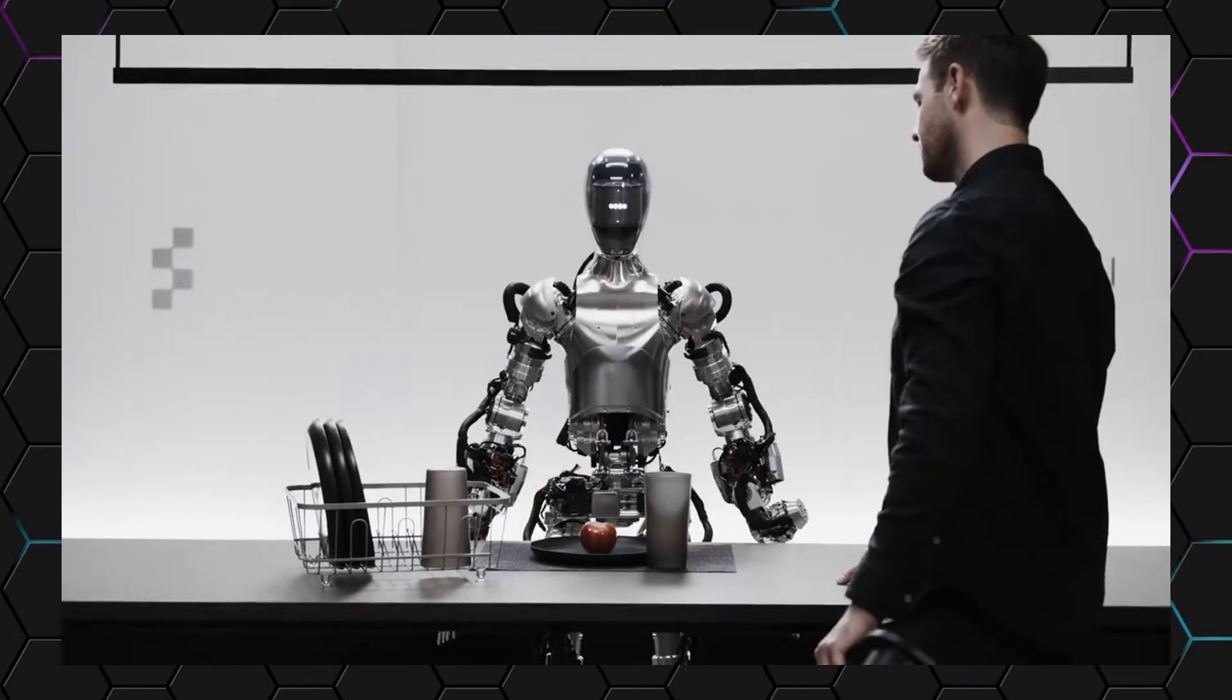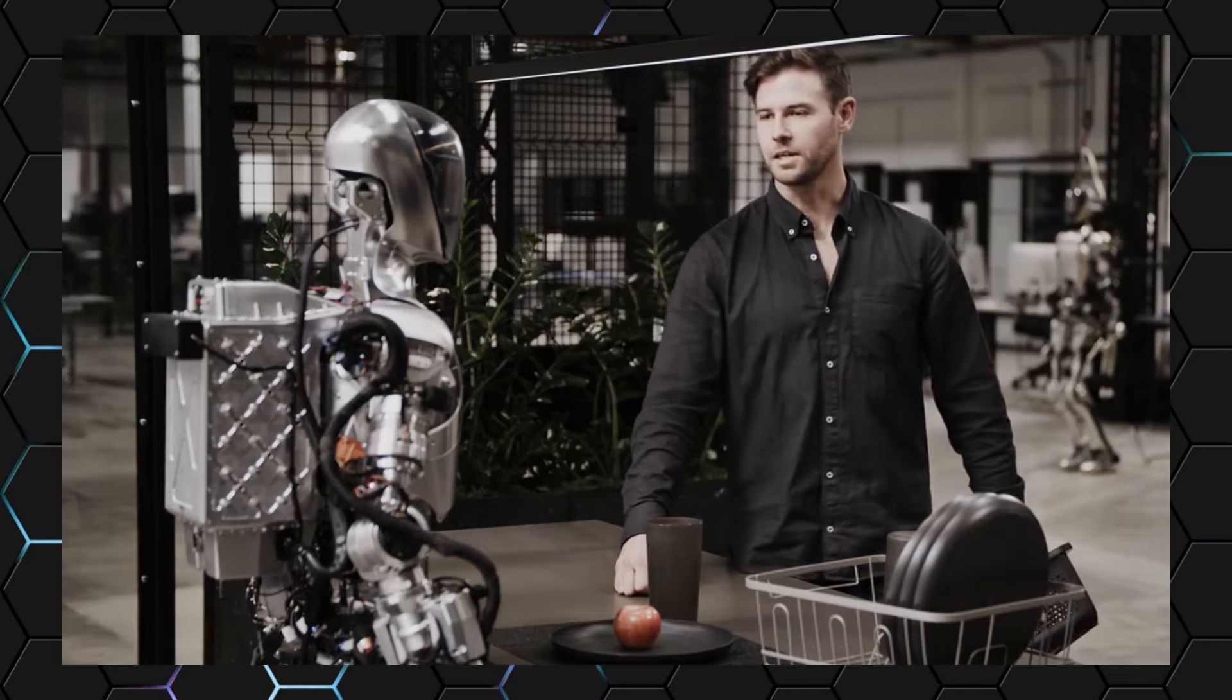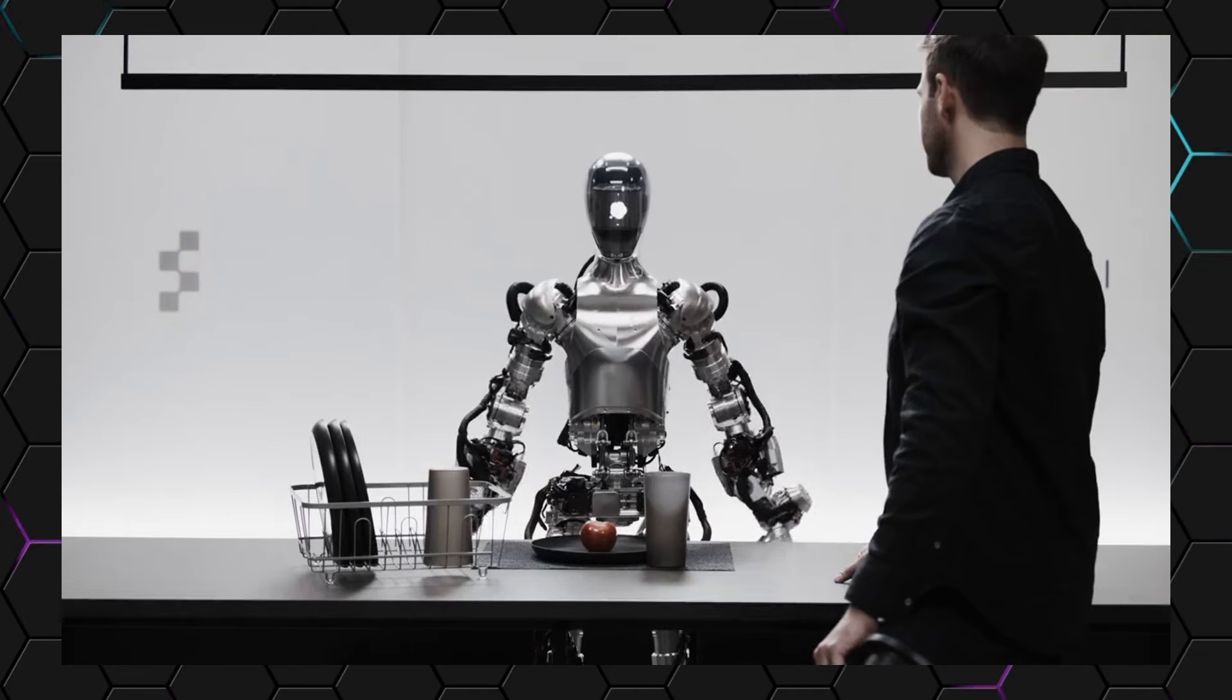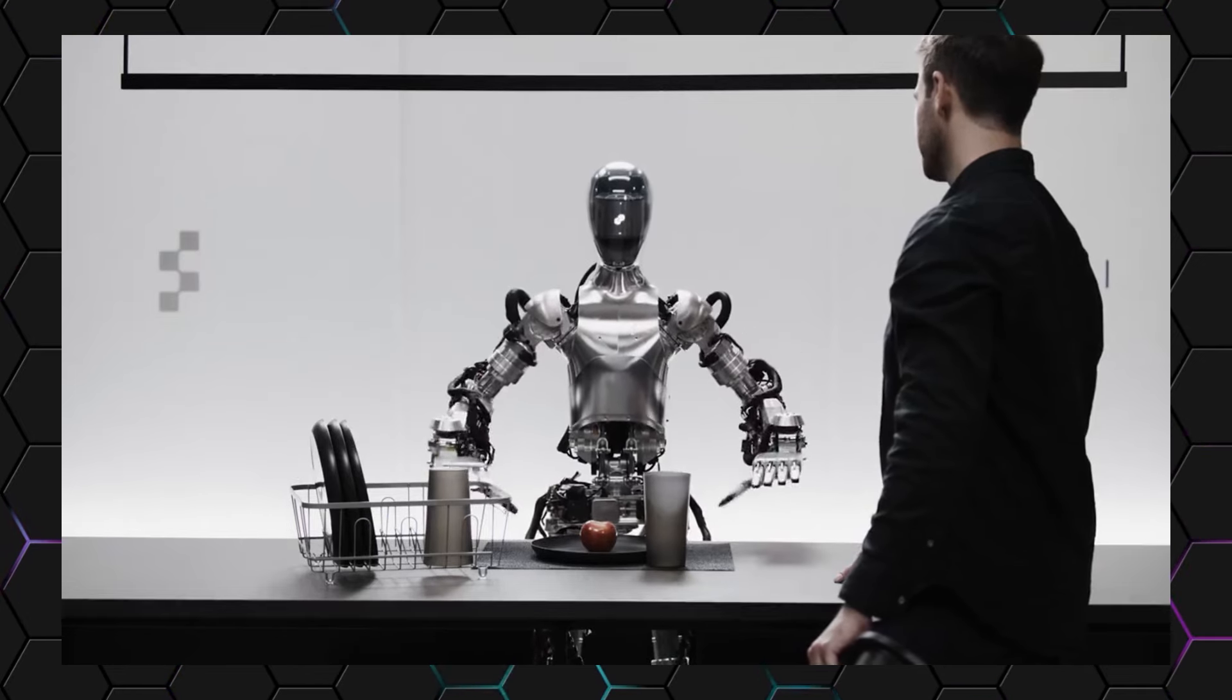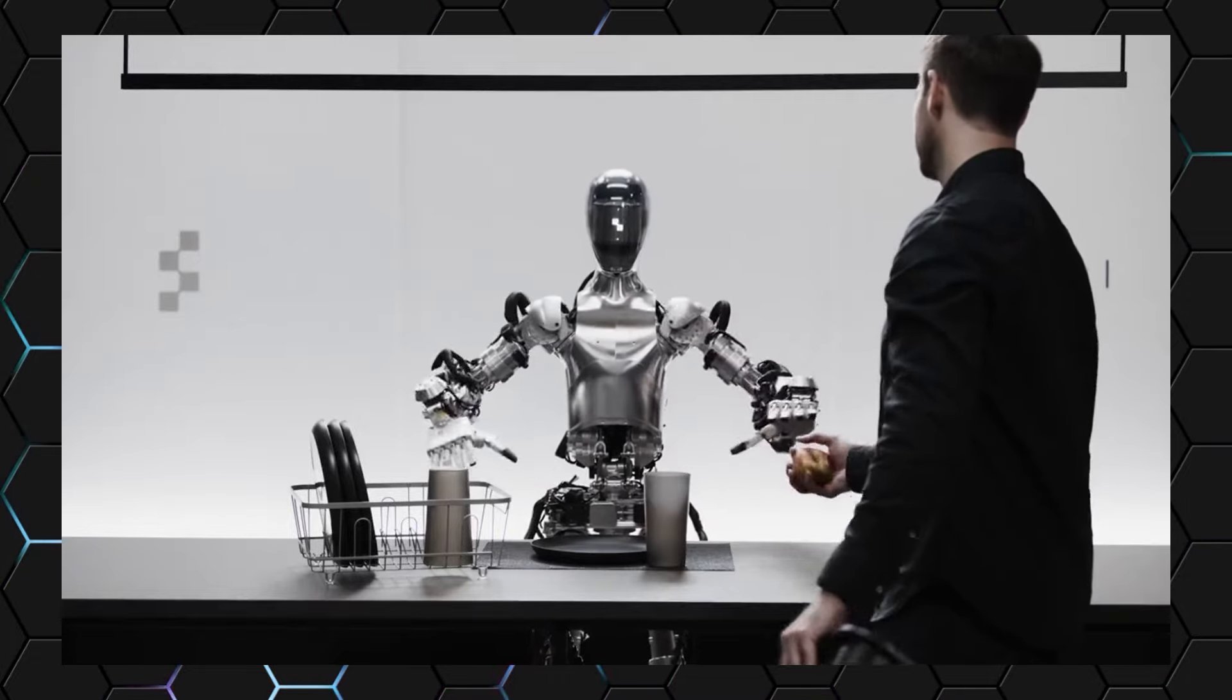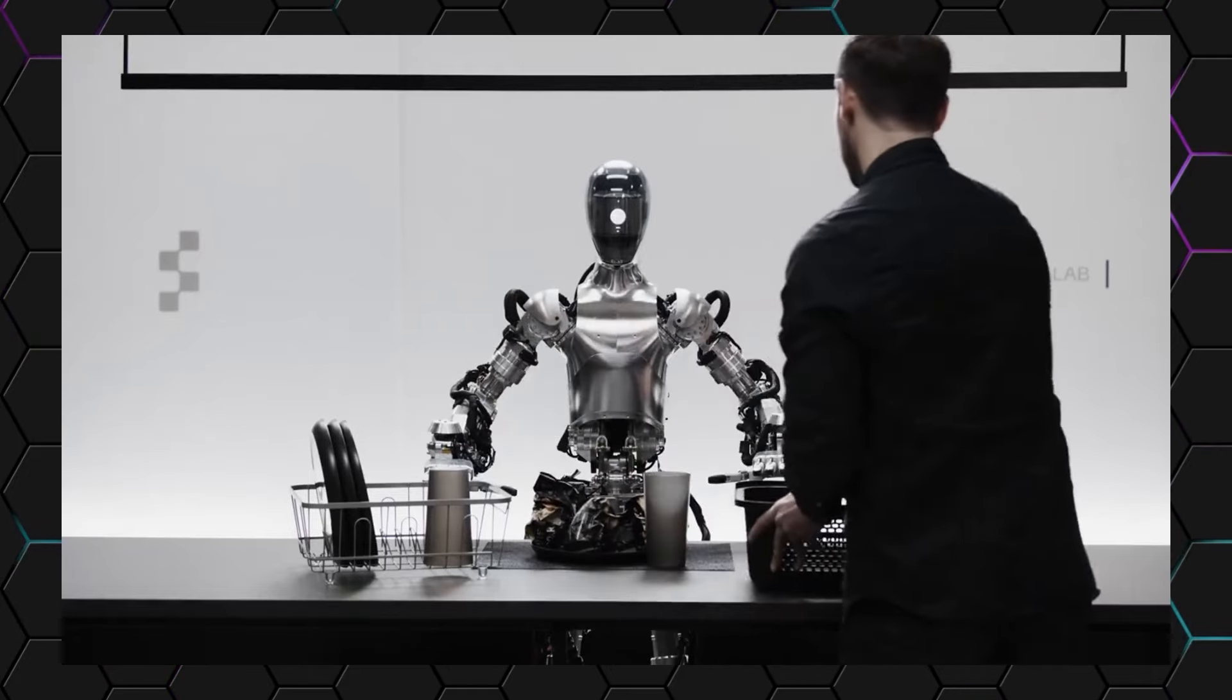As the demo begins, we see the OpenAI humanoid robot standing in a room, surrounded by everyday objects that we might find in any typical household. But from the moment it starts to move, everything becomes clear that this is no ordinary machine. With fluidity that is almost creepy, the robot starts to navigate its environment, displaying a level of awareness and understanding that is nothing short of remarkable.